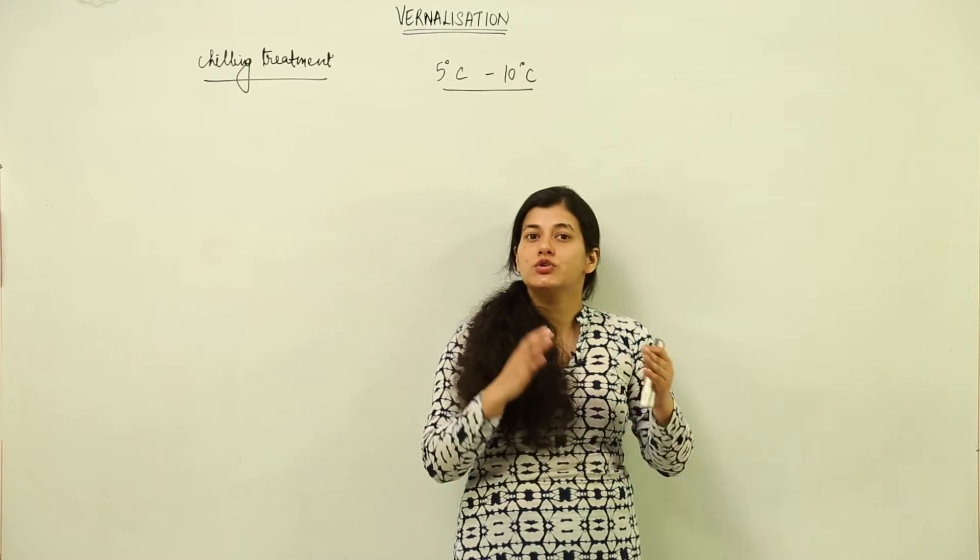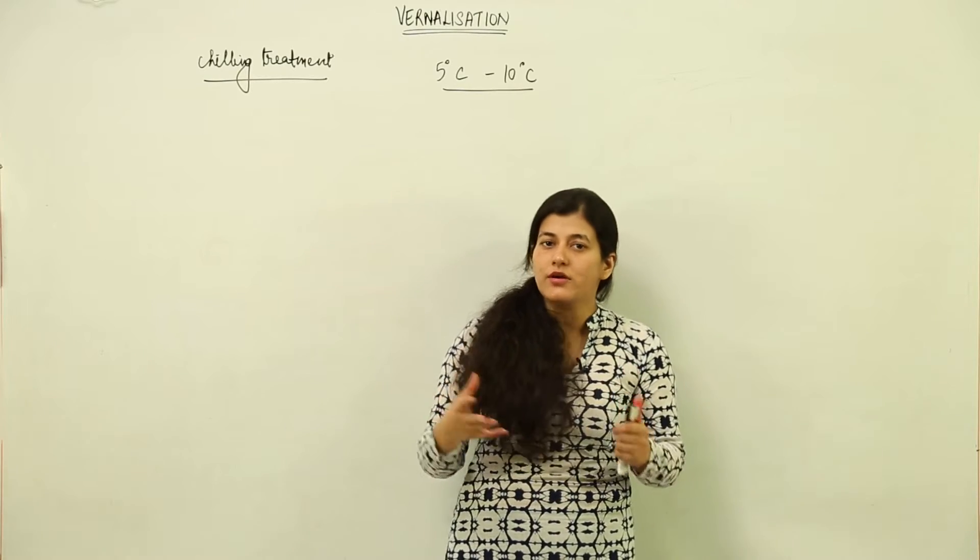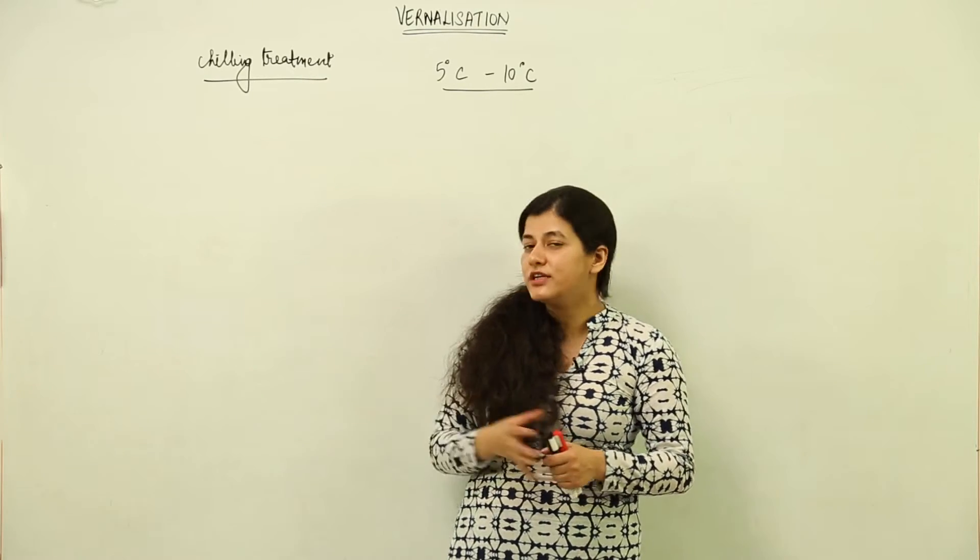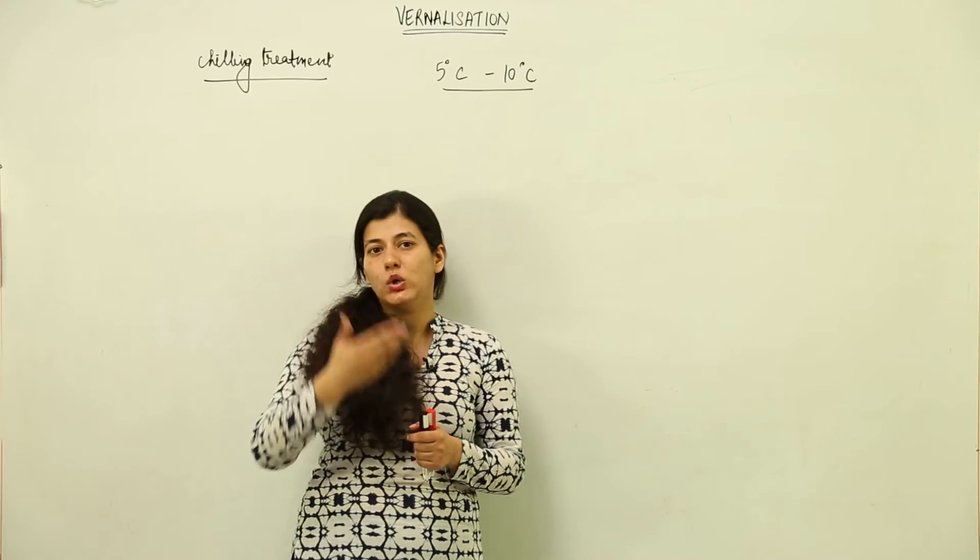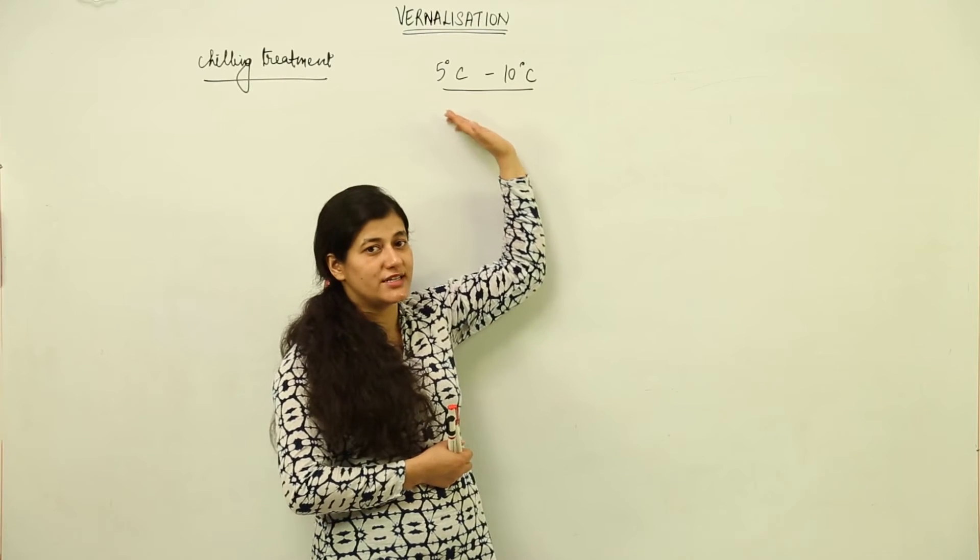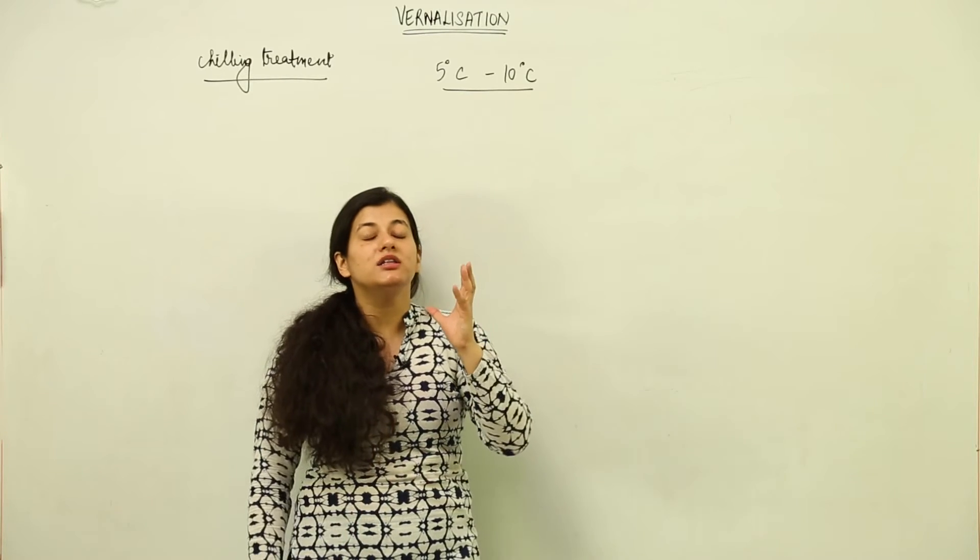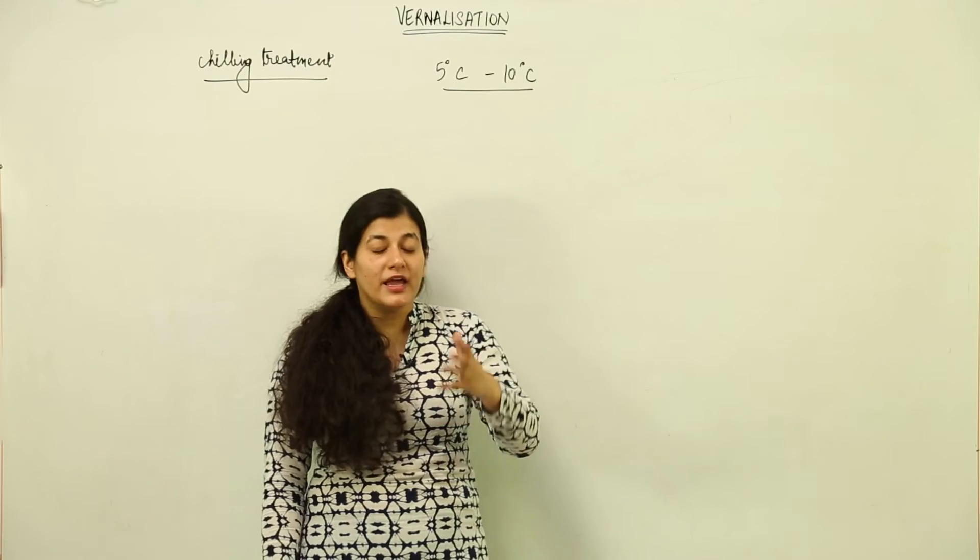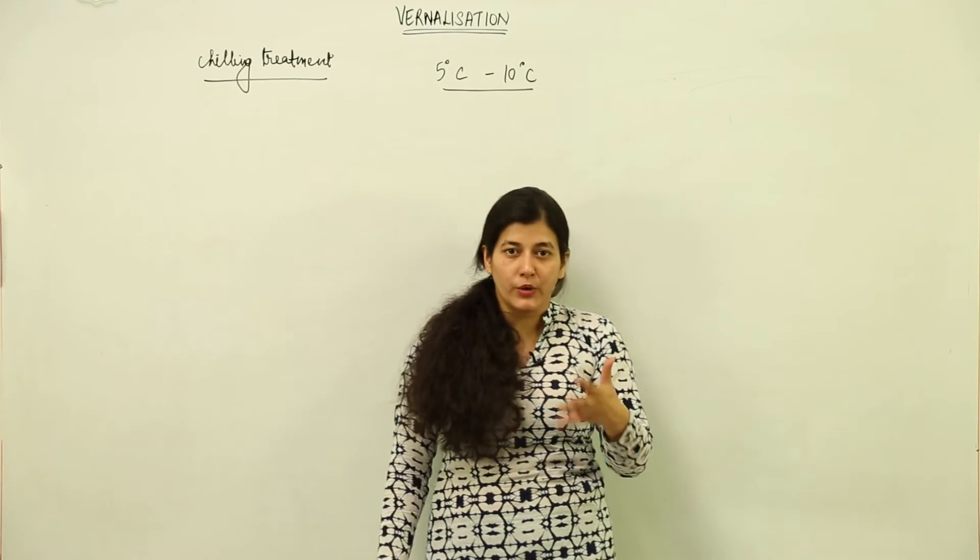In the case of vernalization, the plant is given a low temperature. It is exposed to low temperature of as low as 5 degrees Celsius to 10 degrees Celsius so that the plant can flower easily. In fact, it hastens flowering.